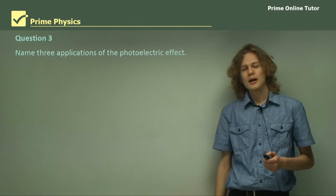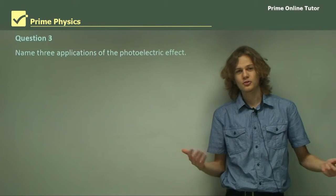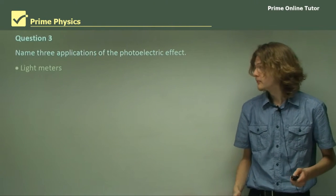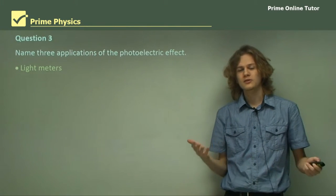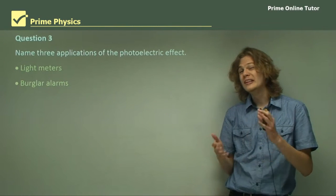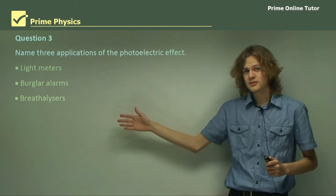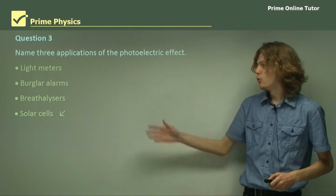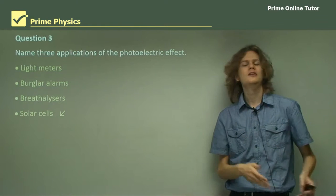Question 3: Name three applications of the photoelectric effect. We've just gone through those, so in fact I can name four. We can use them for light meters, which measure the amount of ambient light for things like photography. Burglar alarms, although that's not really a current use of the photoelectric effect. Breathalyzers, which can be used to analyse the amount of alcohol in someone's blood or breath. Or solar cells, which convert energy from the sun into electrical energy.